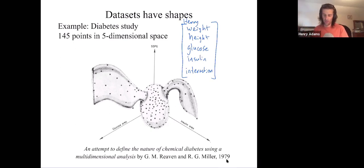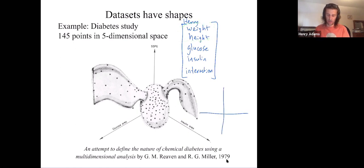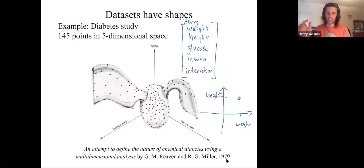If all they had measured was the first two — if they only measured height and weight — then they could have thought of me as a point in 2D. I could have been a point with weight on the x-axis and height on the y-axis. If you did this for a lot of people and plotted their height and weight, maybe there's some loose correlation: as people tend to get taller, they tend to get heavier.